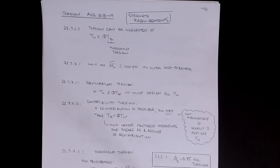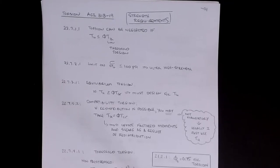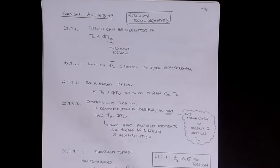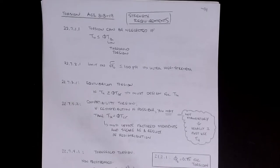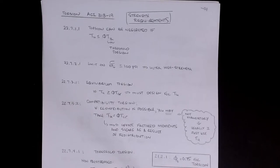Welcome back, concrete design friends. In this video we're going to go over ACI 318, the 2019 edition, and the torsional control strength requirements, some of the theory and factors that affect torsional strength characteristics. We'll make some comparisons to older code methods, but we'll focus exclusively on ACI 318-19.